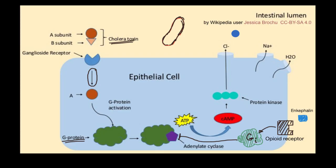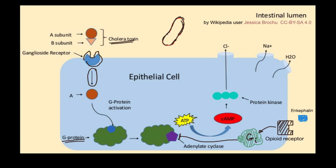Now let's think about what might happen in certain situations. If an epithelial cell had a mutation so its ganglioside receptor doesn't interact well with the B subunit of the cholera toxin, then this activation would not be happening, or at least not as efficiently. Someone with that type of ganglioside receptor would not get as bad diarrhea from the cholera toxin, because the whole signal transduction pathway would not be happening, or not as strongly.